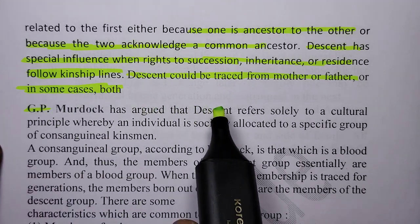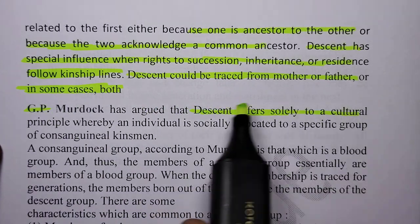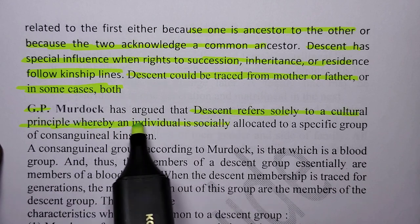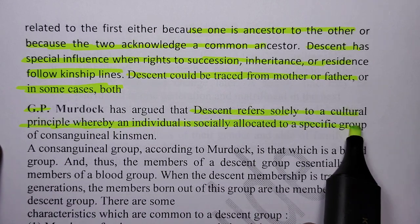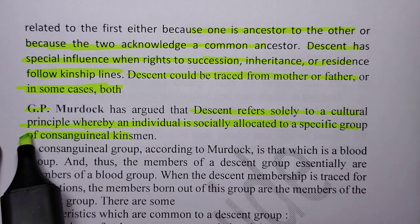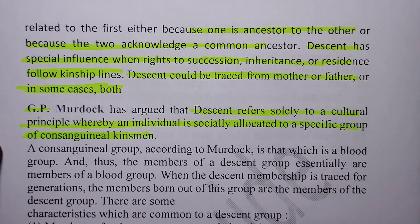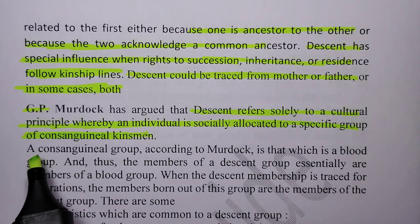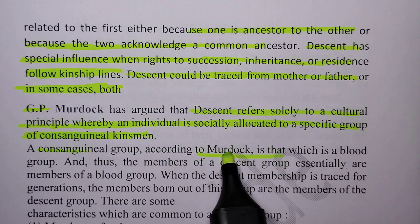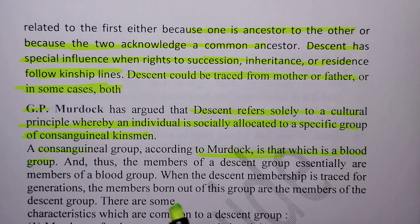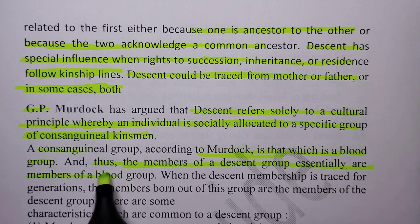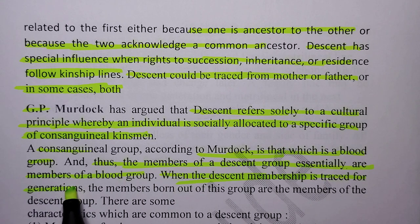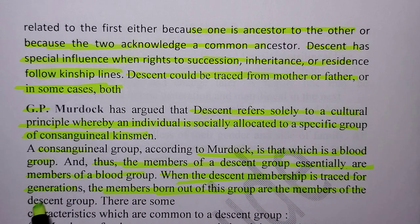G.P. Murdoch has argued that descent refers solely to a cultural principle whereby an individual is socially allocated to a specific group of consanguinal kinsmen. A consanguinal group, according to Murdoch, is a blood group, and thus the members of a descent group are essentially members of the blood group. When descent membership is traced for a generation, the members born out of this group are members of the descent group.